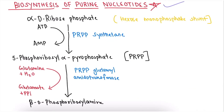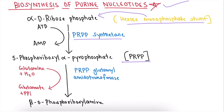Now let's study the Biosynthesis of Purine nucleotide. This topic is a little bit tough, difficult to memorize, and lengthy, so I have split this biosynthesis into four slides to make it easier to remember. Always remember: the starting compound is Alpha-D-ribose-5-phosphate, derived from the Hexose Monophosphate shunt, and the final product is Inosine Monophosphate (IMP). In the first step, PRPP is formed in the presence of enzyme PRPP synthetase, and ATP is converted to AMP. The product 5-phosphoribosyl-alpha-pyrophosphate (PRPP) contains two phosphates.